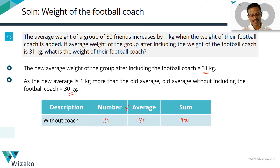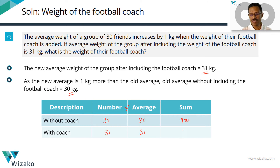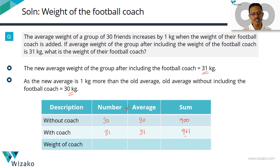With the coach added, the number goes up by 1, so we'll have 31 people in the group. The new average is 31 kgs. So the new sum of the weight of all 31 including the coach is 31 times 31, which equals 961. With the coach the sum is 961, without the coach the sum is 900, so the weight of the coach is the difference between these two, which equals 61 kgs.